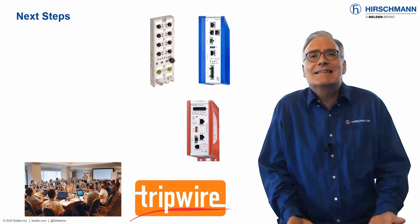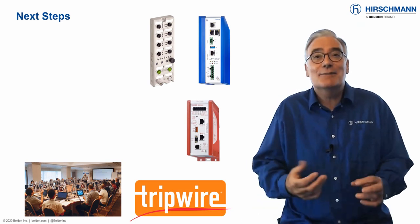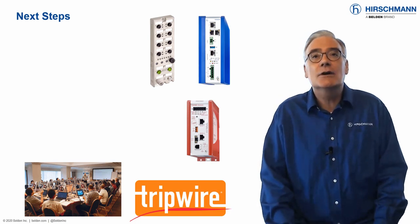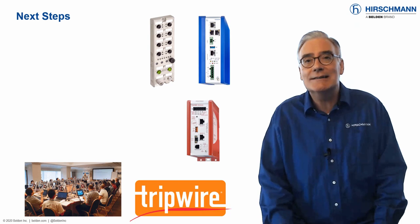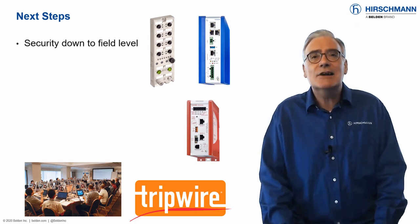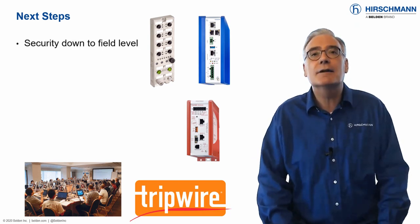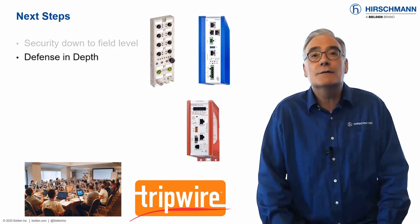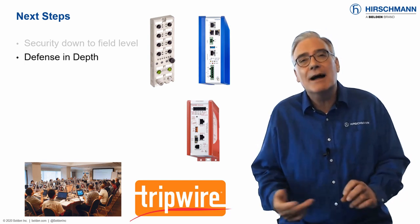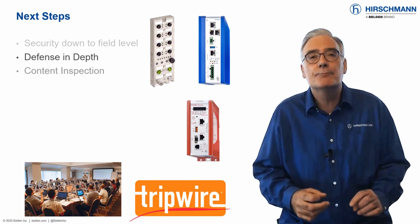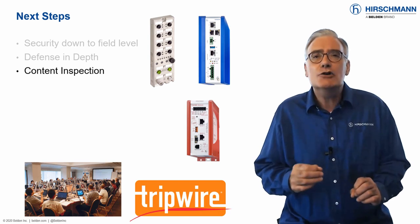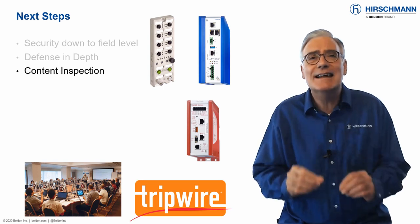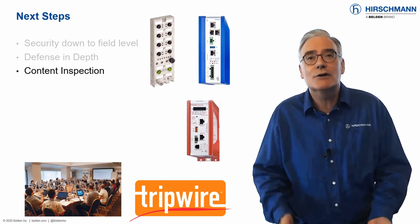So where do you go next in this network security process? As network attacks increase in sophistication, so do the remediation tools and strategies. Robust security must be extended to the field level. Defense in depth involves creating multiple layers of defense throughout a network, typically by using firewalls. Content inspection allows you to permit or deny communication by looking deep into the contents of network traffic.